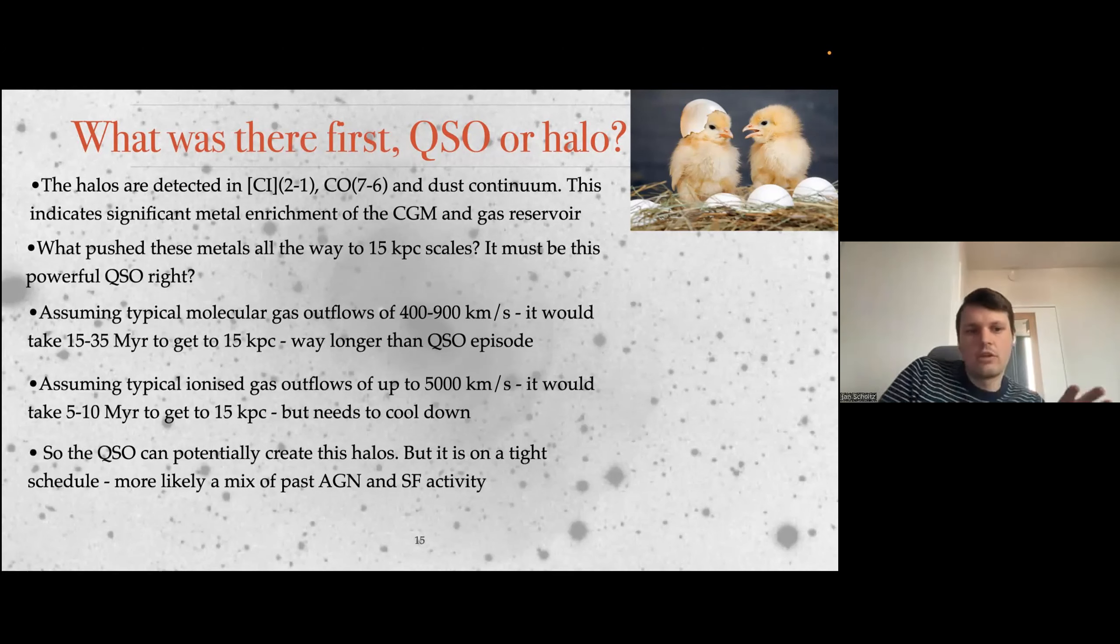So rather than quasars actually potentially creating these halos, it's kind of on a tight schedule. Maybe it's a mixture of past AGN and star formation activity. And now maybe all of this cold gas is accreting back on the galaxy. And that's what's actually triggering this massive obscured quasar episode in the first place. So the quasar can create this halo, but also it can clearly be there because of the halo in the first place. We cannot distinguish between these two scenarios.